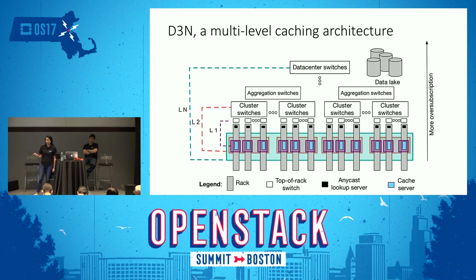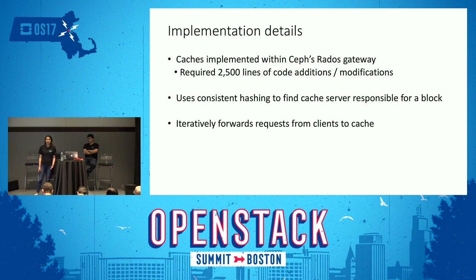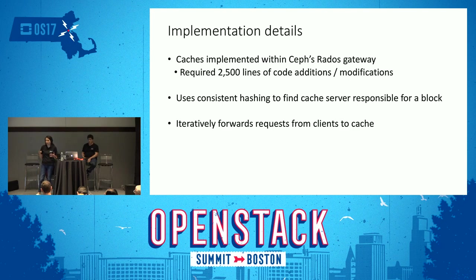We implemented D3N in the Massachusetts Open Cloud, deploying only the first and second level caches as that's what our architecture requires. We implemented our caching solution within the Rados gateway, modifying approximately 2,500 lines of code. When forwarding a request from L1 to L2 cache on a miss, we use a consistent hash algorithm to compute the location for each block, and our solution iteratively forwards requests from clients to the appropriate cache.